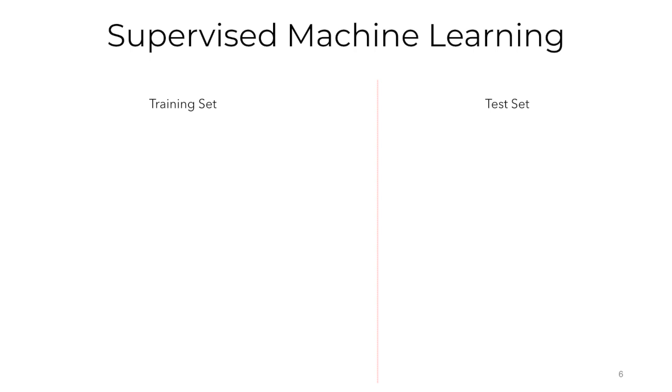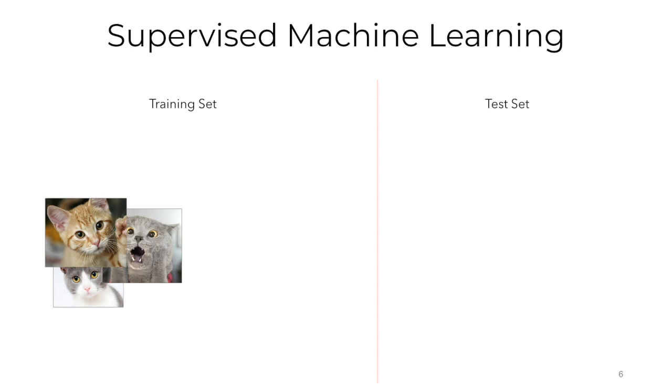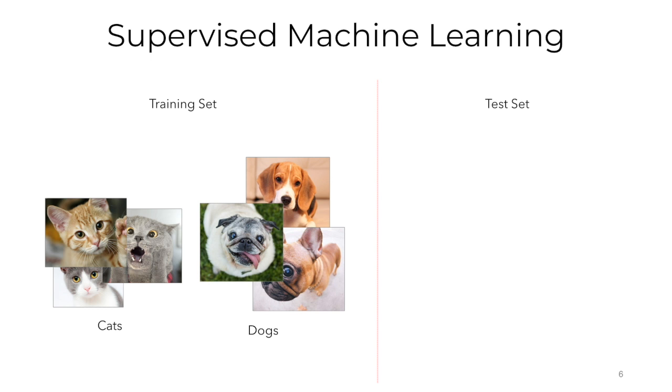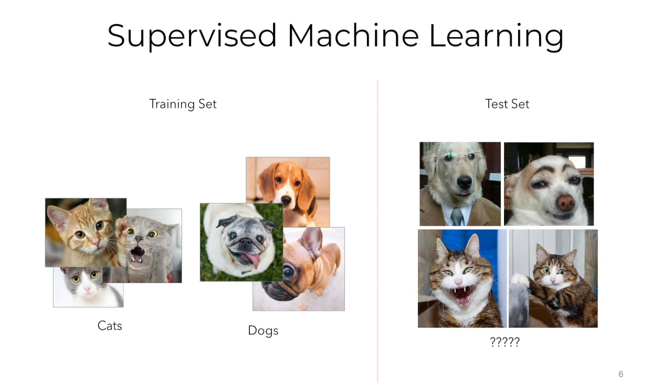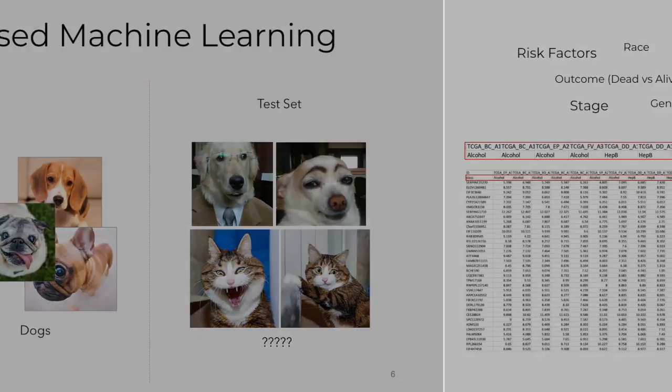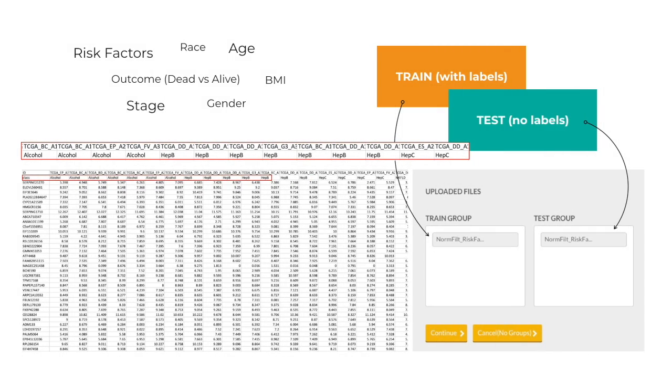To illustrate this concept simply, we can look at the classification of images. We train the model by showing it images of cats and dogs, and then testing that prediction on other variations of cat and dog images. But instead of cats and dogs, we have gene expression.